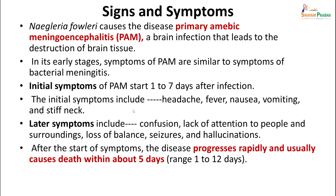Signs and symptoms of primary amoebic encephalitis: early stages present similarly to bacterial meningitis, usually starting within 1 to 7 days. Initial symptoms include headache, fever, nausea, vomiting, and stiff neck. Later symptoms include confusion, lack of attention to surroundings, loss of balance, seizures, and hallucinations. After onset, the disease progresses rapidly and usually causes death within 1 to 12 days, often as quickly as 5 days.